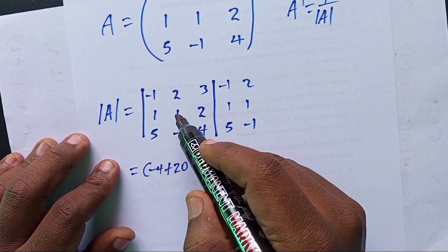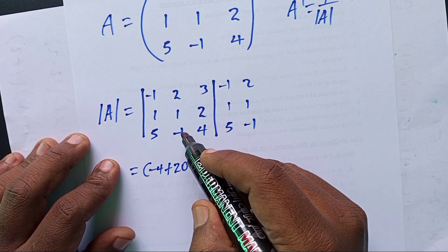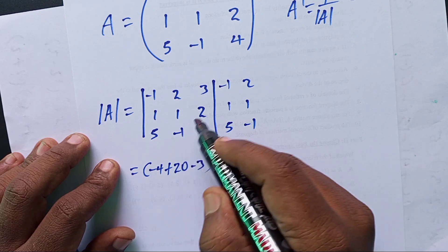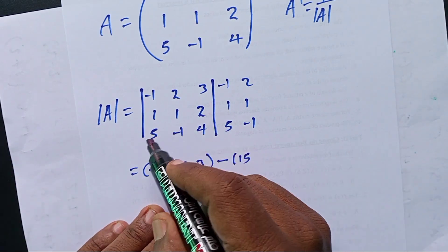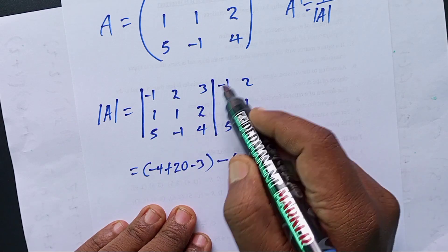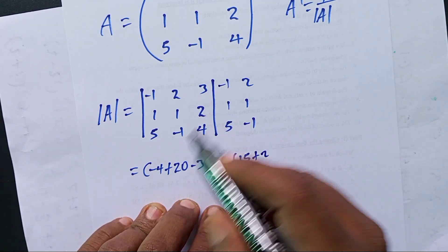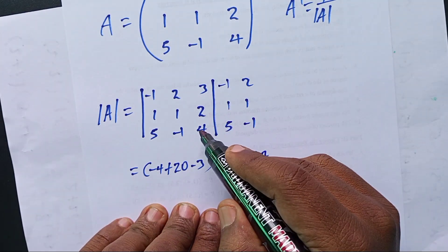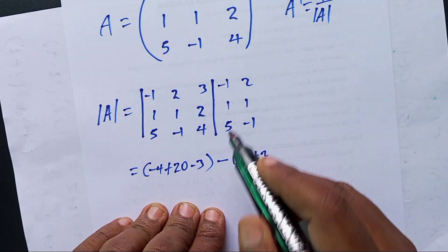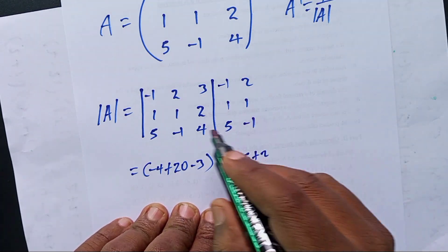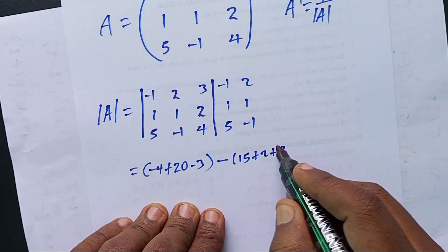Continuing: 5 times 1 times 3 is 15. Then 1 times 2 times minus 1 gives minus 2, plus 2. And 4 times 1 times 2 is 8, plus 18.